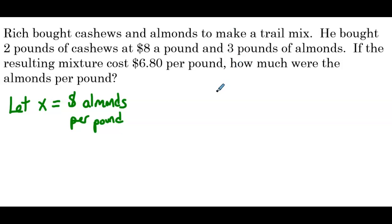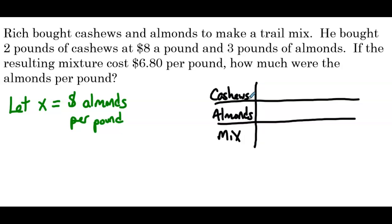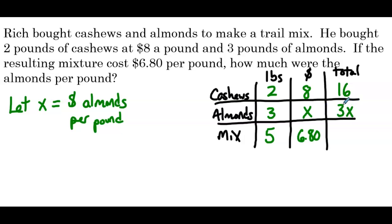So we'll set up our table. So we have cashews, almonds, and our mixture. So we have pounds, we have price per pound, and then we have the total. So cashews, 2 pounds, almonds, 3 pounds. So our mix has 5 pounds. Cashews, $8 a pound. Almonds, that's our unknown. And our mix, $6.80. So the total he spent on cashews was $16. The total on almonds, 3x. And the total on our mixture, if we do 5 times 6.8, we get 34.